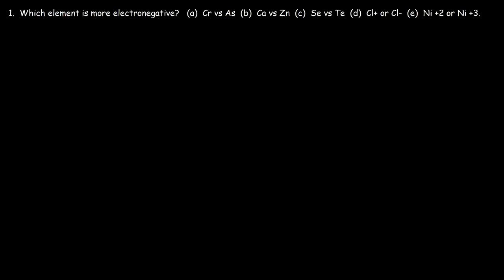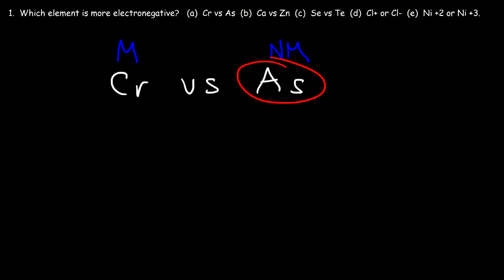Now let's work on some practice problems. Which element is more electronegative? Part A: chromium or arsenic? Chromium is a metal and arsenic is a nonmetal. Nonmetals are usually more electronegative than metals, so we should expect that arsenic is going to be more electronegative.